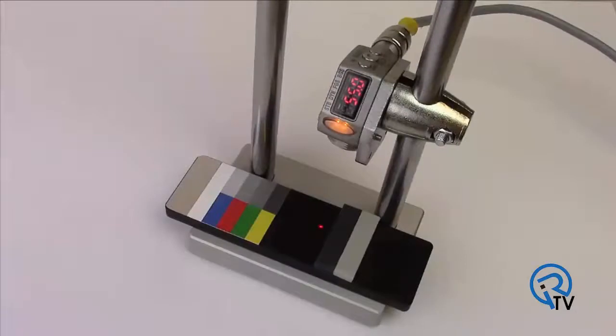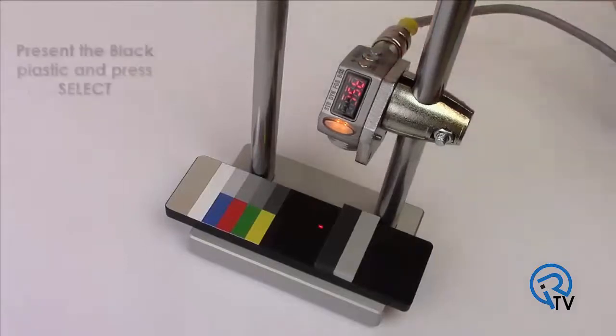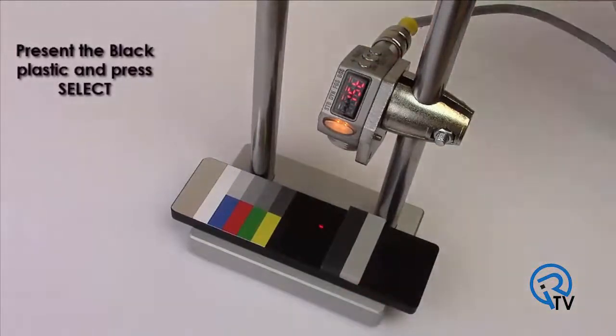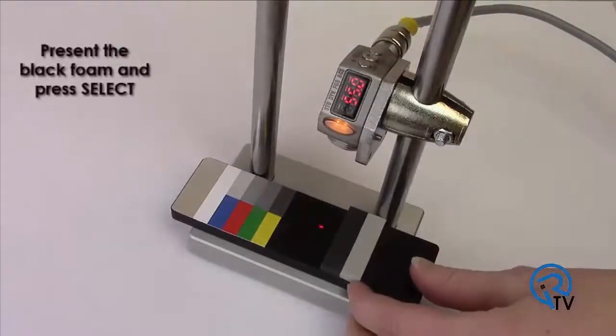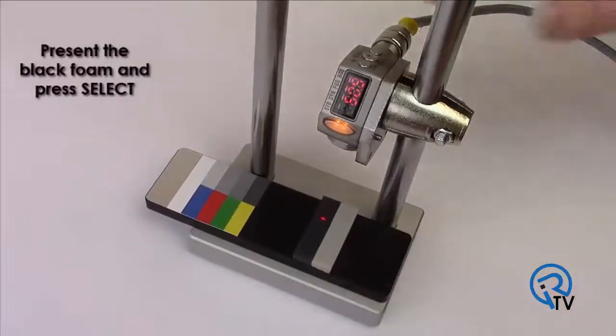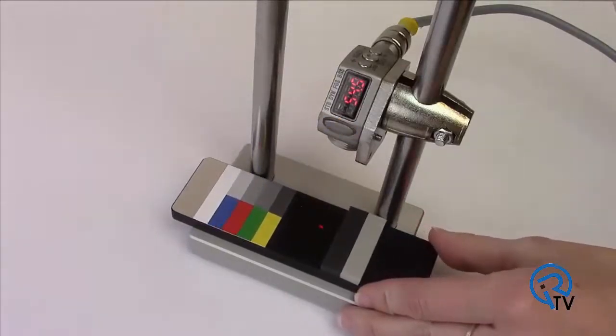The display shows the current distance. Press and hold teach for two or more seconds. Present the black plastic piece and press select. Now present the black foam and press select. The display flashes and returns to run mode. The foam is now detected but not the background.